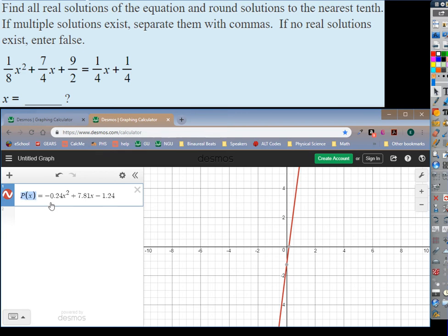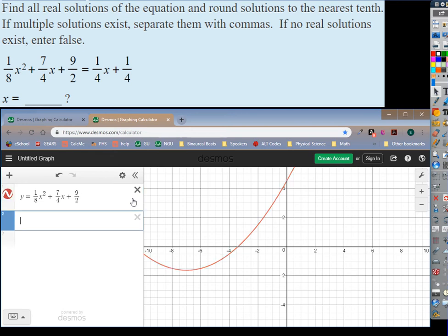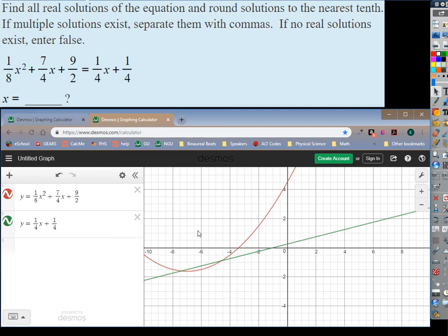We don't even have to be fancy and use function notation. We can just call it y if we want. We can just set y equal to, I'm just going to graph everything on the left side. So that's just 1 eighth x squared plus 7 fourths x plus 9 halves. And I get some graph. That's the graph of everything on the left side. Now let's go down to the next line and let's do a different graph. Let's graph everything on the right side of the equation. A little better.